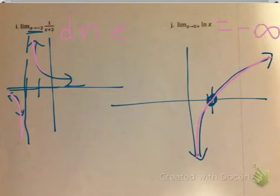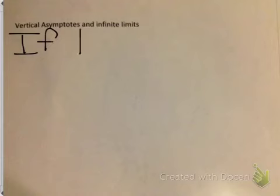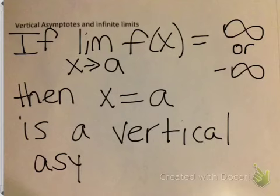Vertical asymptotes and infinite limits: if the limit as x approaches some value a of the function equals infinity or negative infinity, then x equals a is a vertical asymptote. If the graph is approaching infinity or negative infinity as I get closer and closer, then I must have a vertical asymptote.